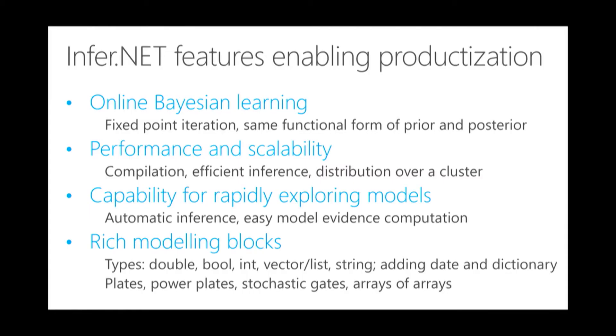What are the features that Infer.NET has that enabled all of this? The first is that we are good at doing online learning. When you go into production, you quickly realize that your products deal with user data that keeps on arriving, usually in large volumes, and you really want to be able to learn from it. What really matters is how quickly you can get from data to results. The model basically gives the formula for doing that — we don't do any sampling, we run a fixed-point iteration. In Infer.NET, the prior and the posterior have the same functional form, so you don't need to convert from one to the other, which would basically kill performance.